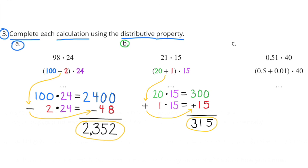B: 21 times 15. We can look at 21 times 15 as 20 plus 1, times 15. 20 times 15 equals 300, and 1 times 15 equals 15. 300 plus 15 equals 315. So, 21 times 15 equals 315.